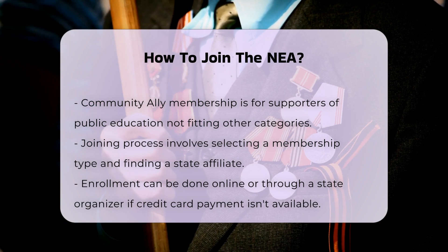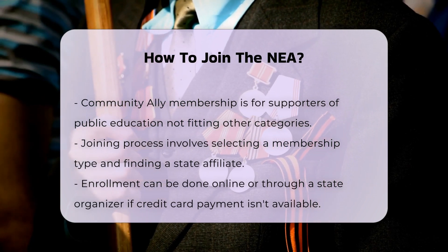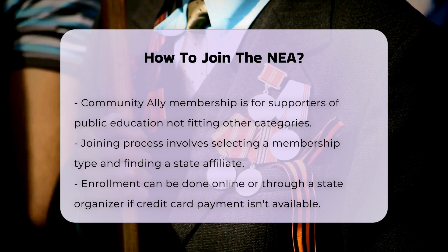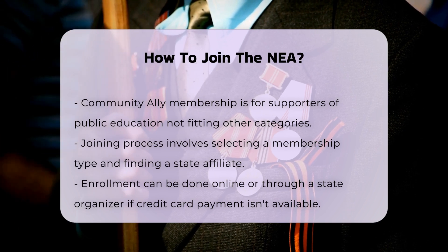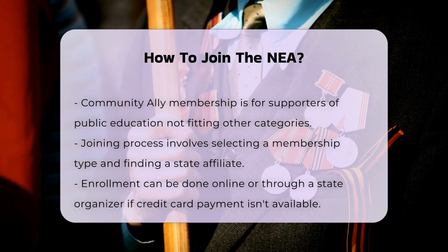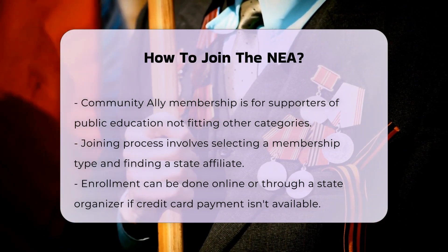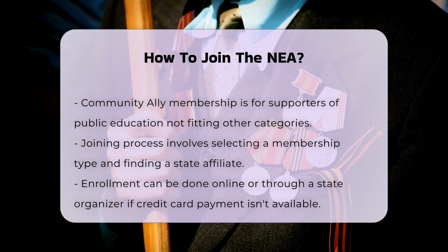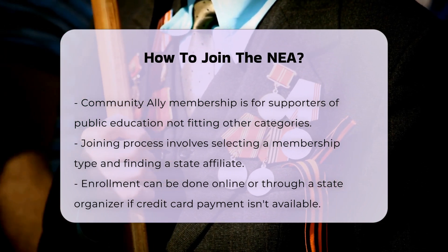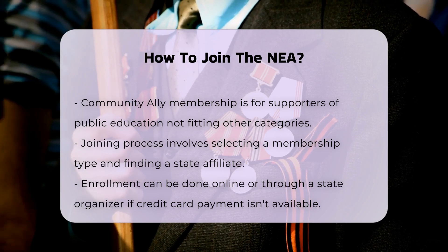Specific Details for Aspiring Educators. Eligibility: you must be enrolled in a post-secondary program preparatory for employment in a position that will make you eligible for active membership. Cost: national dues are $15 per year, with additional state and local dues determined by individual state and local affiliates. Liability Insurance: you are covered with liability insurance immediately upon joining, and you will receive a welcome letter via email as proof.